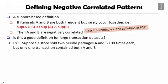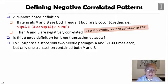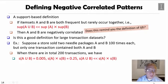Let's look at one example. Suppose a store sold two needle packages A and B 100 times each, but only one transaction containing both A and B. Then we will see these two needle packages A and B are likely negatively correlated. But when there are in total only 200 transactions in your data sets, you may see support A and B getting together because they got only one time. So 1 over 200, you get this number. This is a pretty small number.